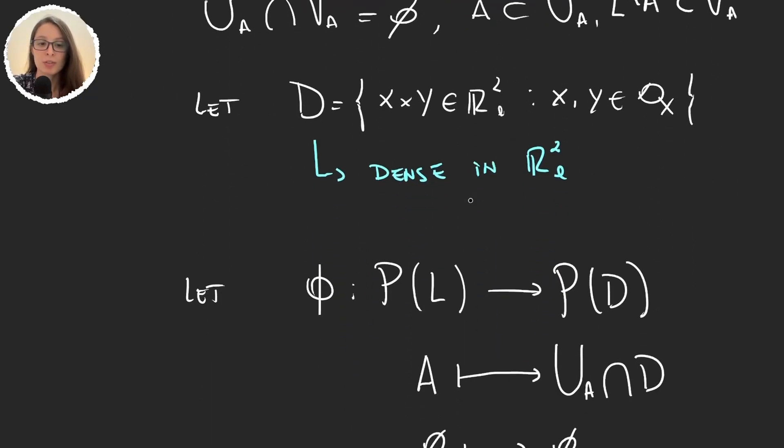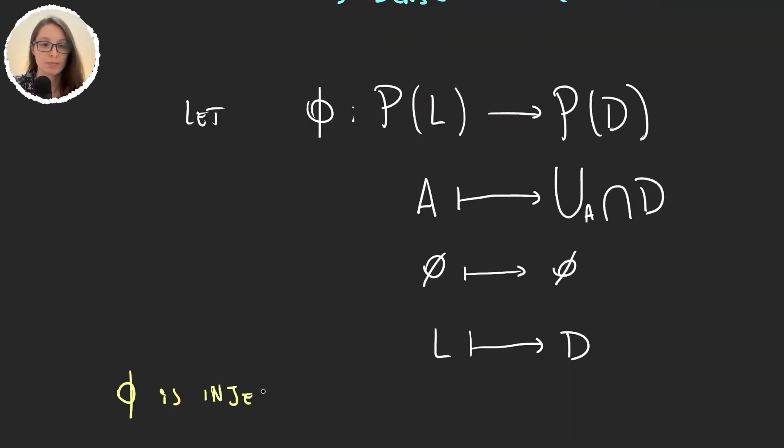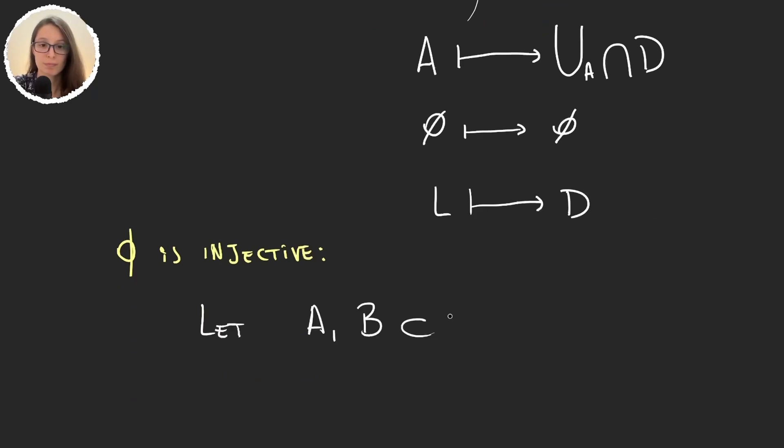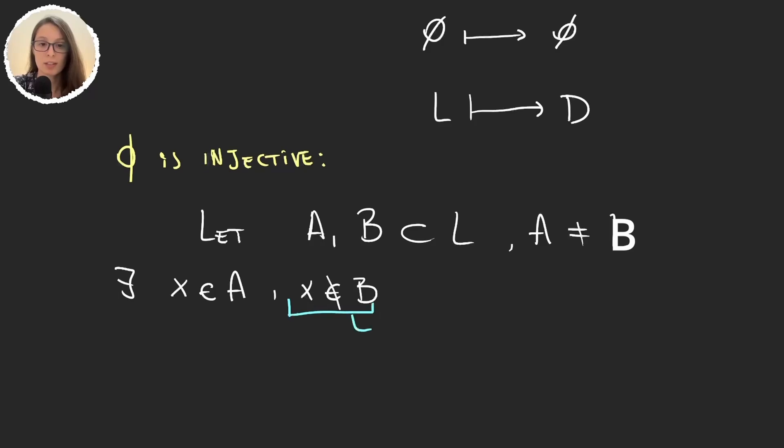To prove this we will take two different elements in the domain and prove that the images of those sets are also different. These sets they may have an intersection but the thing is that they are different. Because they are different we know that there will exist some element X that is in A and is not in B. And because X is not in B then X is in B complement.